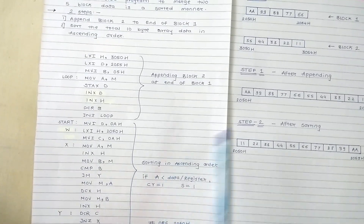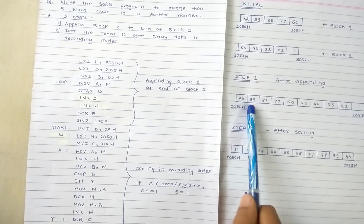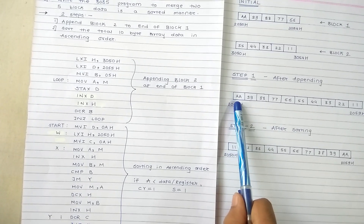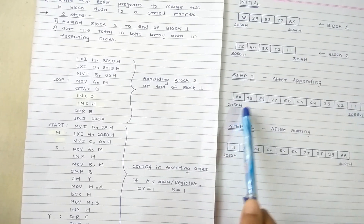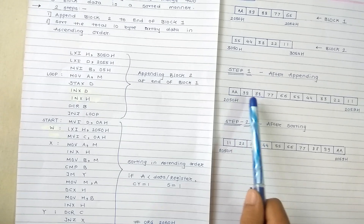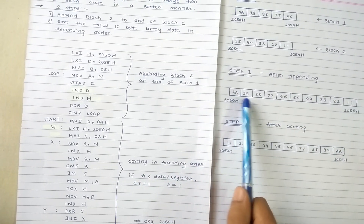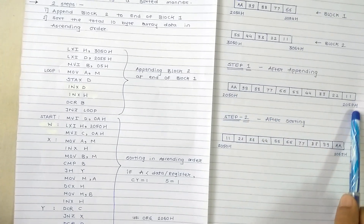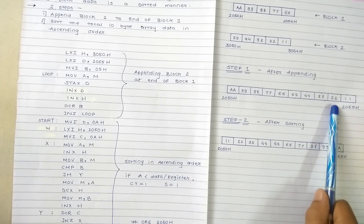Since the accumulator data is greater than the next location's data, it is not in sorted order, so we exchange the two values. We move the accumulator data into the next location, decrement HL to point to the previous location, and move the larger value into that previous position, then point HL back to the next location. In this way, the exchange between the two data takes place, moving the larger data toward the end of the block — this is the bubble sort logic.